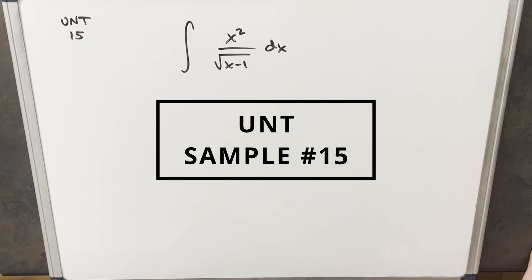Hey, we have here another integral from the UNT integration B. This was sample problem number 15. We have the integral of x squared over the square root of x minus 1 dx.